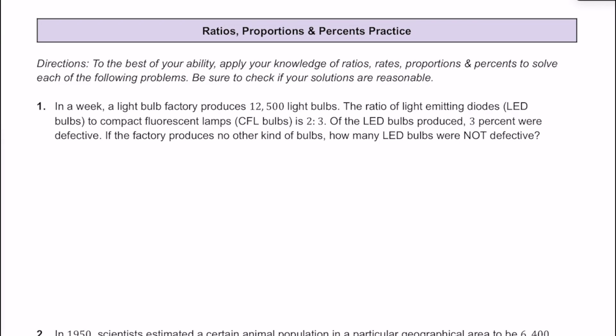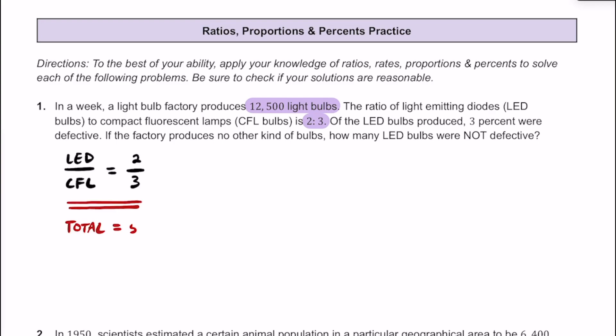In this first problem, we know that a light bulb factory is going to be producing 12,500 total light bulbs. The ratio of light-emitting diodes, or LED bulbs, to compact fluorescent lamps, or CFL bulbs, is going to be at a ratio of 2 to 3. So right away, I'm going to write down the ratio of LED light bulbs to CFL light bulbs, and that's going to be a ratio of 2 to 3. If you know the ratio is 2 to 3, then there would be a total of 5 light bulbs, because 2 plus 3 is 5.